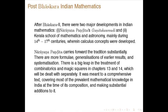After Bhaskara II, there are two major developments in Indian mathematics. One is Narayana Pandita's Ganita Kaumudi, and the other is the Kerala school of mathematics and astronomy, mainly during the 14th to 17th centuries, where calculus concepts were developed. You have already heard a little bit about it and will hear more in the lectures to follow.